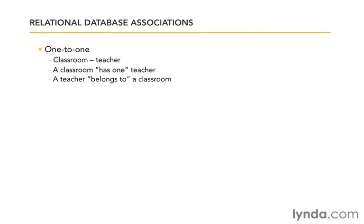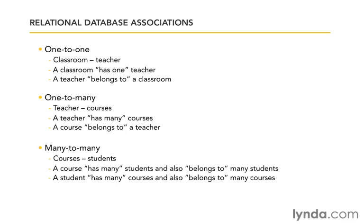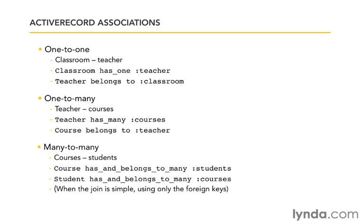So now we've seen all three relationship types: one-to-one, one-to-many, and many-to-many. It's no accident that I put quotes around 'has one', 'belongs to', and 'has many' — Rails is going to use those same terms as method names. We're going to have: classroom has_one teacher, teacher belongs_to classroom, teacher has_many courses, course belongs_to teacher, course has_and_belongs_to_many students — to reflect both the fact that it has many and belongs to many — and student has_and_belongs_to_many courses. As a footnote, this is only true when the join is simple, using simple foreign keys. A little later on, we'll also take a look at a more complex way to do many-to-many joins.